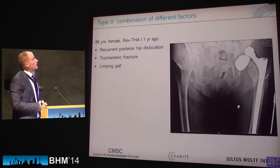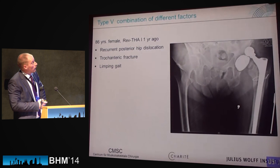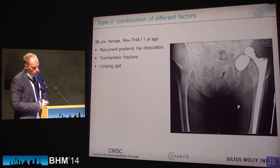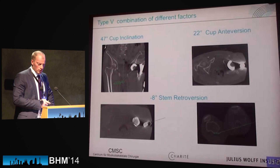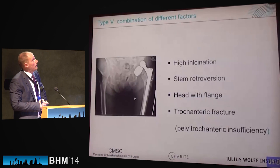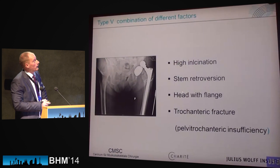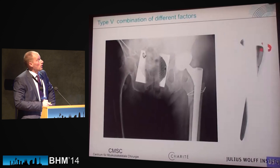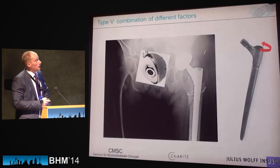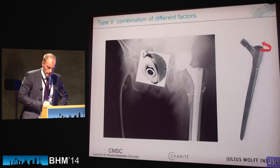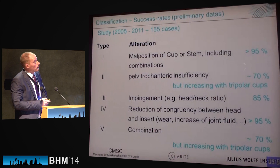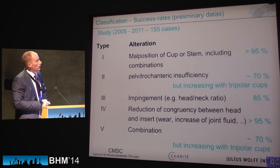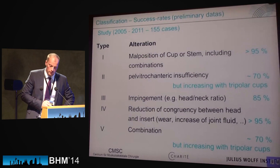Here is an example: an 86-year-old female, one year after revision total hip arthroplasty, suffering recurrent posterior hip dislocations with a trochanteric fracture and limping gait. CT scan revealed retroversion of the modular stem, high inclination of the cup, a flanged head causing impingement, and a trochanteric fracture. Treatment was replacement of the cup with a dual mobility due to muscle insufficiency and correction of the modular stem retroversion. With our classification system we have a good success rate for each type, and especially in Types 2 and 5, using a dual mobility cup increases this rate.